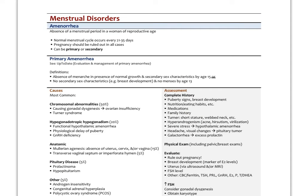Finally, we come to amenorrhea — the absence of a menstrual period in a woman of reproductive age. A normal menstrual cycle occurs every 21 to 35 days. Pregnancy should be ruled out in all cases of amenorrhea as a standard test. Primary amenorrhea is the absence of menarche in the presence of normal growth and secondary sex characteristics by age 15, or no secondary sex characteristics and no menses by age 13.